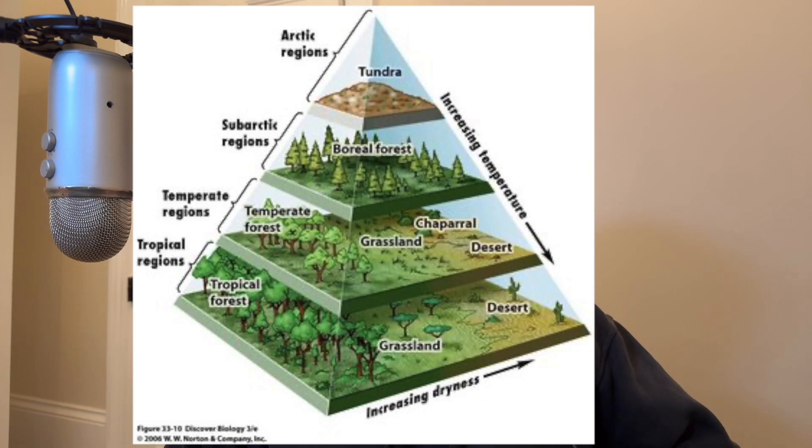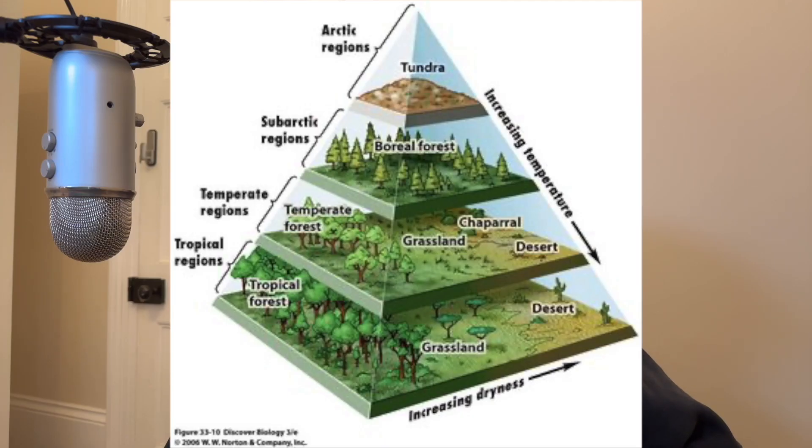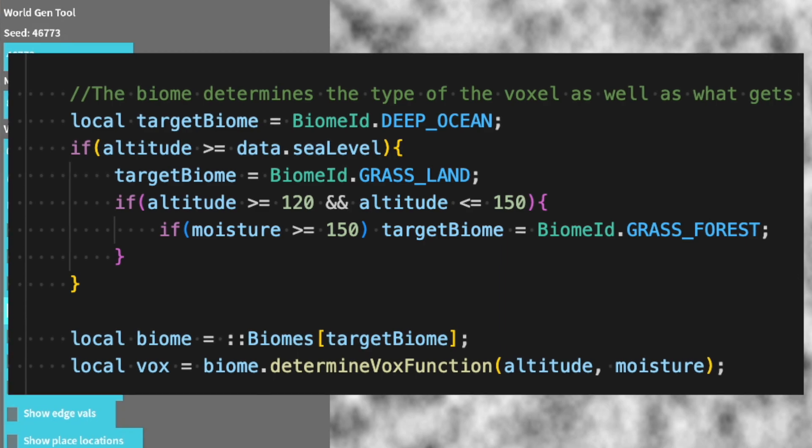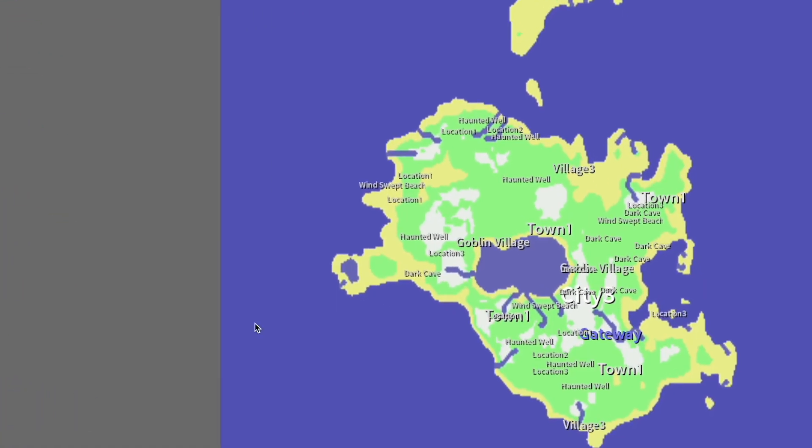The solution to this was moisture. I originally generated one Perlin noise map to keep track of altitude, but the solution was to also generate a second map which contained the moisture values. The moisture map isn't really based on any geographical concepts, but observe this graphic — combining two factors can give variation in the biomes. This graph does temperature and moisture, but you get the picture. So I generated a moisture map and added code to compare moisture and altitude when deciding what voxel to place.